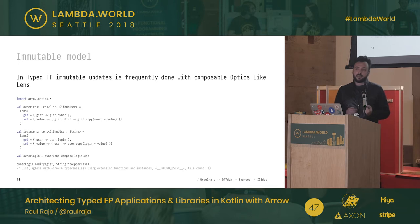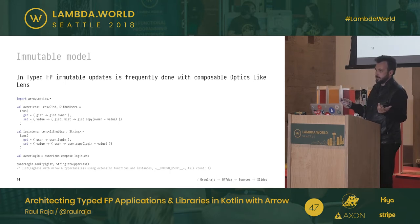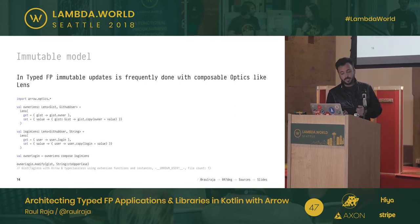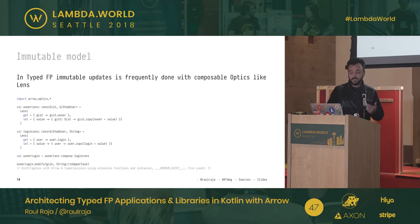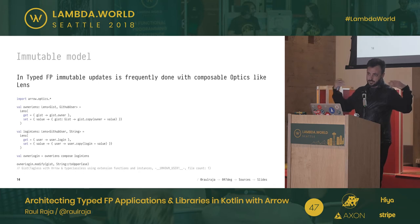Arrow provides an optics library. With optics you can create lenses. Lenses are a way to define a getter and a setter to access and set a value. In the example we have a lens for `owner` and a lens for `login`, defining how you get to those properties from a Gist or a GitHub user.